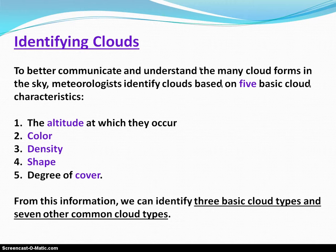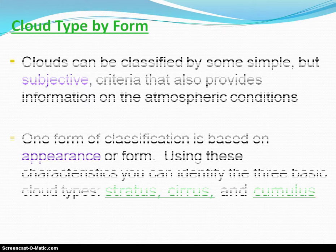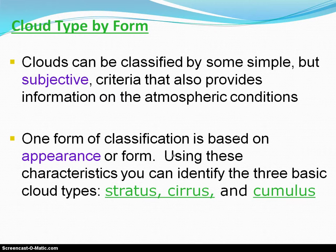We're really going to be focusing on altitude, shape, cover, and whether or not they will bring rain — those are the big ones. There are three basic types of clouds that we're going to look at, and then some combinations of these cloud types. We can identify clouds by form and by altitude: stratus, cirrus, and cumulus clouds.